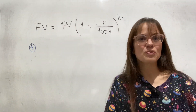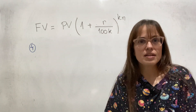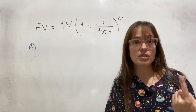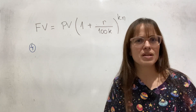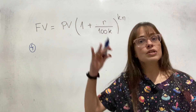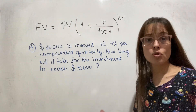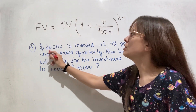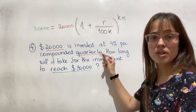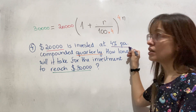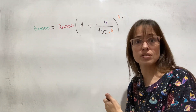I've never seen a question that gives you information and asks for K, the number of compounding periods — that would be a weird question since there are only a few values K can take: 1 for yearly, 2 for half-yearly, 4 for quarterly, and 12 for monthly. But they can give you information and ask for N, the number of years it takes an investment to reach a certain value. In example four, we invest 20,000 as present value until it reaches 30,000 as future value, compounded quarterly so K is four, at 4% PA.